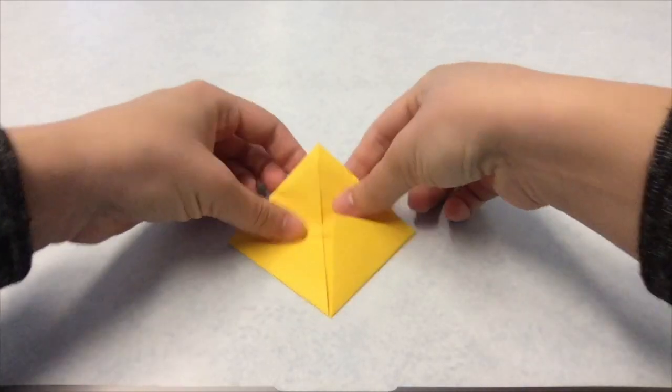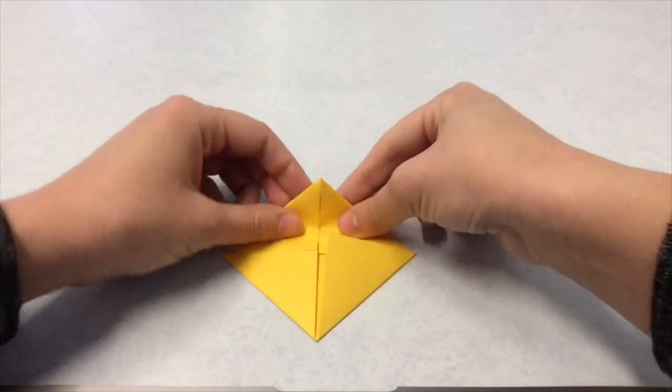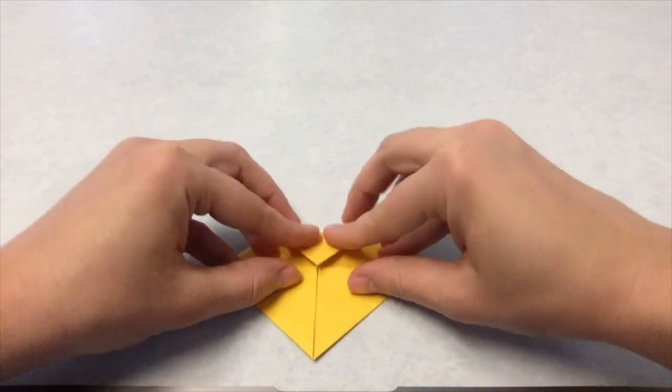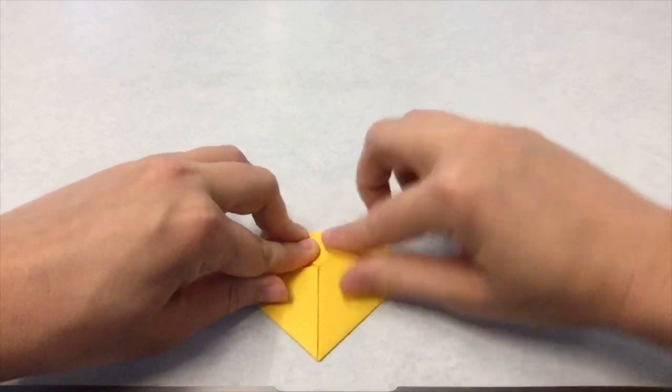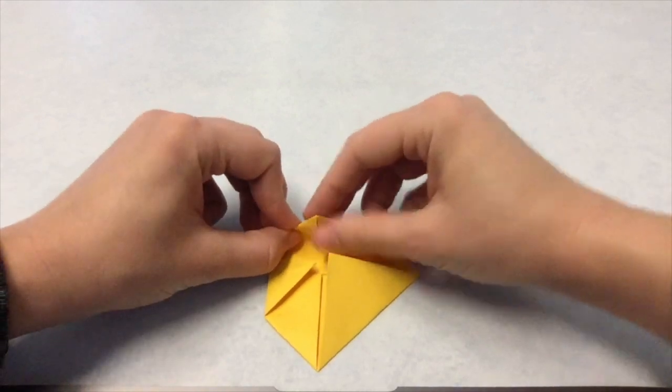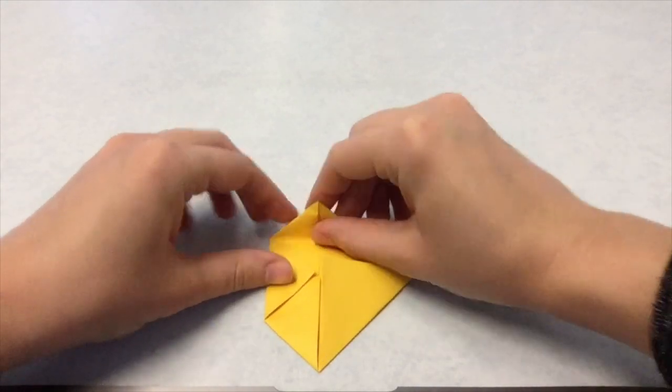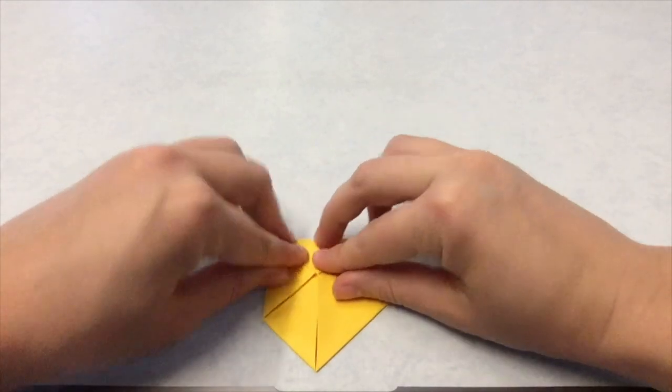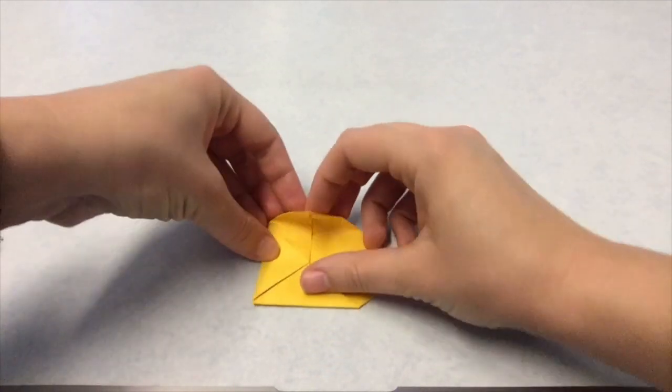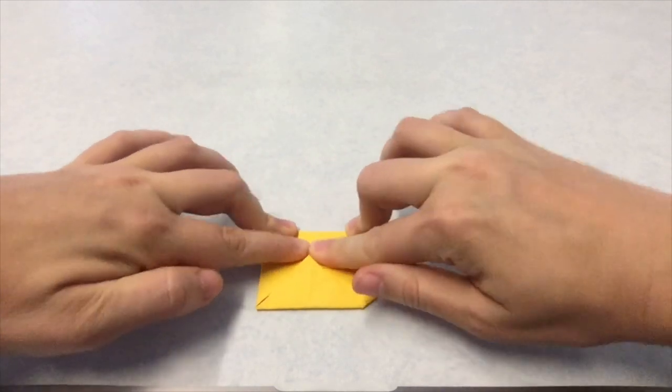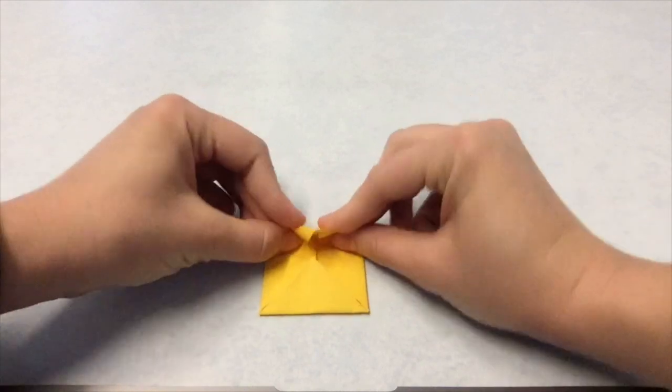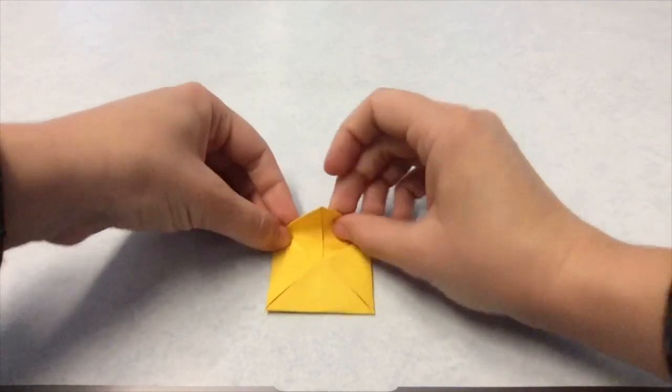Let's create the next layer of petals. Fold each corner into the center point again. In this round of folds, you'll notice the paper is thicker and harder to crease. If you start to notice that your folds are getting a little uneven, don't worry, just keep going. It will still look great. Now our square is one-eighth the size of the original square.